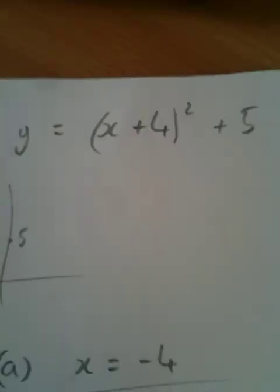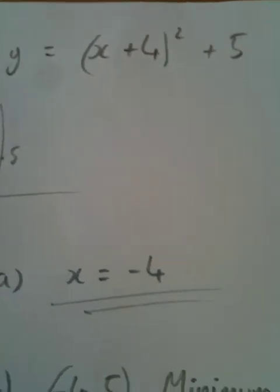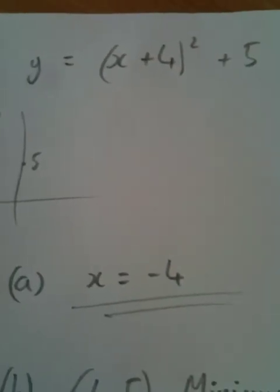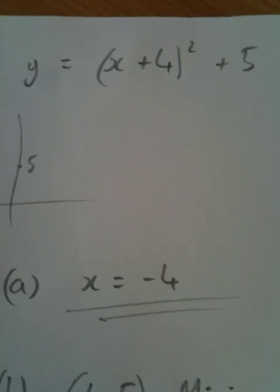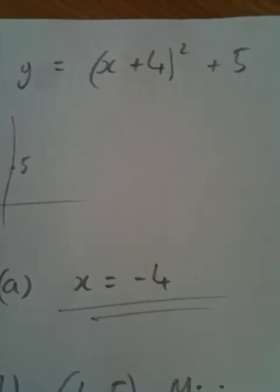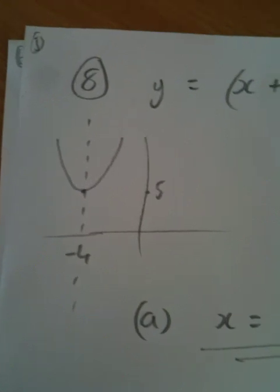Number 8. This time it gives us the equation y equals x plus 4 all squared plus 5. So going on with what I've just said, this plus 5 will move the parabola up by 5. The plus 4 in the bracket will move it 4 to the left.